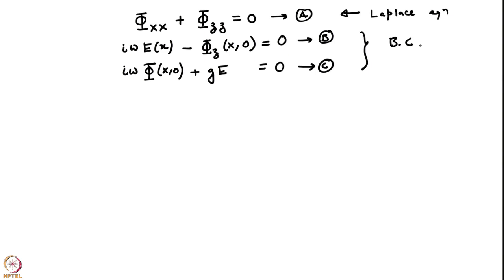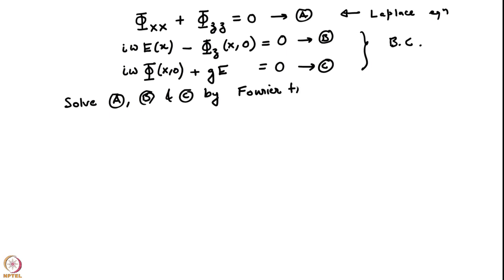In both equations B and C, z is always 0, so it is just a function of x. We are going to solve A, B, and C by Fourier transform. This has two advantages: first, it will convert this into what looks like an ordinary differential equation; second, it will allow me to represent arbitrary initial conditions easily.